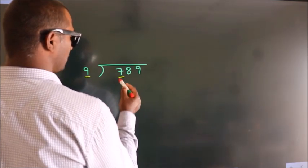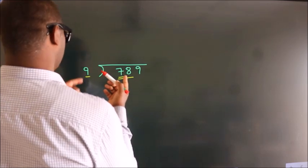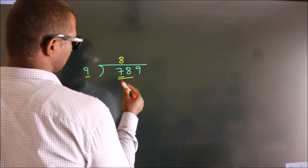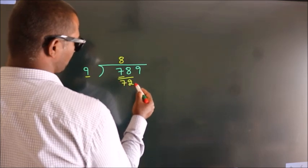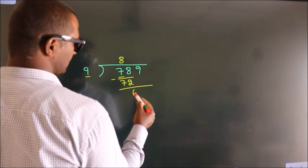So we should take 2 numbers, 78. A number close to 78 in the 9 table is 9 eights, 72. Now we subtract, we get 6.